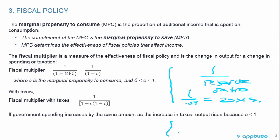And if we increase the reserve ratio to 10%, then the money multiplier would have been 1 divided by 0.1, which is 10 times. And that was a lower increase in the money supply.